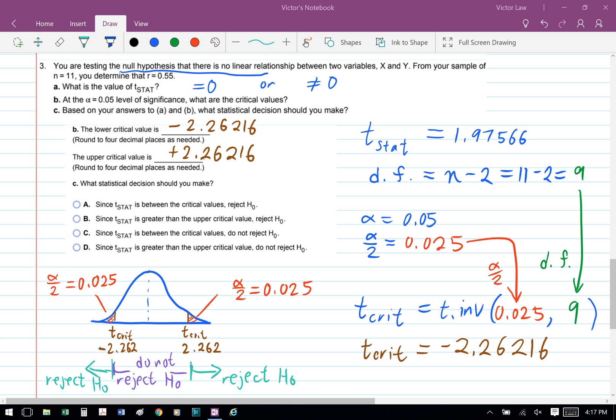So if we look at the diagram, our lower critical value is negative 2.26216, and our upper critical value is positive 2.26216. And our decision rule is that if the t statistic is between the two numbers, we do not reject H0.